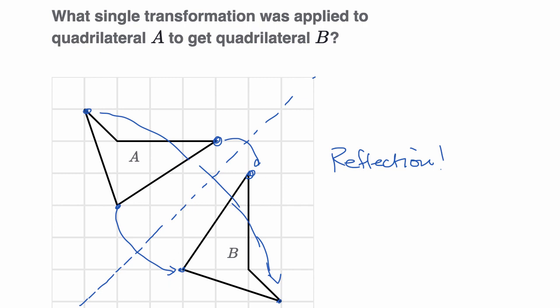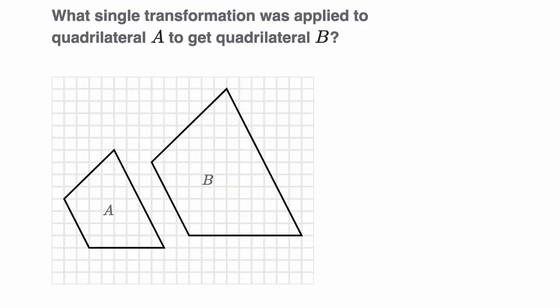All right, let's do one more of these. What single transformation was applied to quadrilateral A to get to quadrilateral B? So quadrilateral B is clearly bigger. So this is a non-rigid transformation. The distance between corresponding points looks like it has increased.